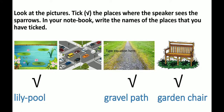Look at the picture. Tick the places where the speaker sees the sparrows, and in your notebook write the names of the places that you have ticked. The first picture is of the lily pool, the second picture is of the busy road, the third picture is of the gravel path, and the fourth picture is of a garden chair. Among these four pictures, the busy road is not in the poem, so we will not tick it. We will tick the pictures of the lily pool, gravel path, and garden chair, and write these three words in your notebook.